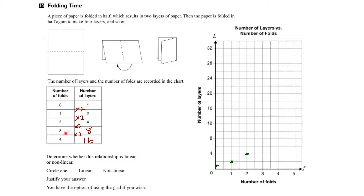After three folds it's eight layers thick, so we go over to three and up to eight and plot that point. And after four folds it's sixteen layers thick, so we go over to four and up to sixteen and plot that point.